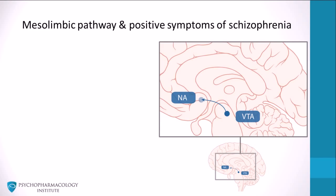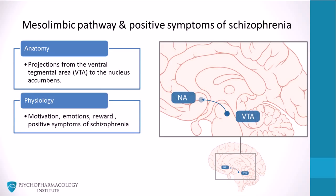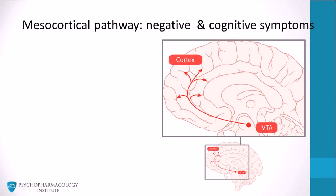The mesolimbic pathway is relevant to positive symptoms of schizophrenia. This pathway is made up of projections from the ventral tegmental area, which innervate many forebrain areas. The most important is the nucleus accumbens. Research suggests this system plays a key and complex role in motivation, emotions, reward, and positive symptoms of schizophrenia. D2 antagonists reduce positive symptoms of schizophrenia, and all antipsychotic drugs have the ability to reduce dopaminergic neurotransmission.